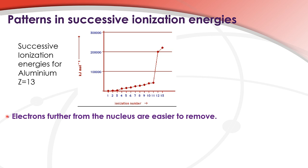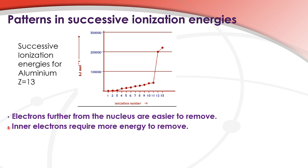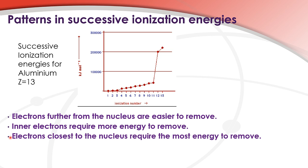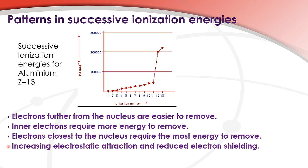So electrons further from the nucleus are easier to remove. Inner electrons require more energy to remove, and electrons closest to the nucleus require the most energy to remove. The reasons for this are that as you get closer to the nucleus, you have increasing electrostatic attraction between the nucleus and the electrons, and you get reduced electron shielding.